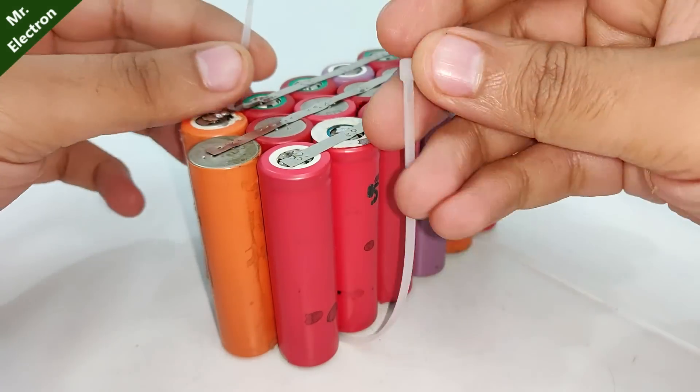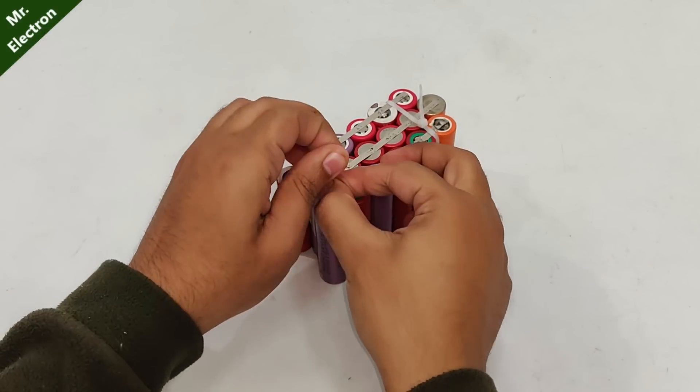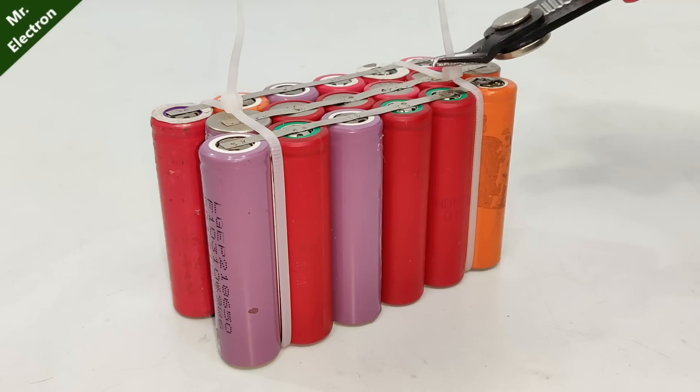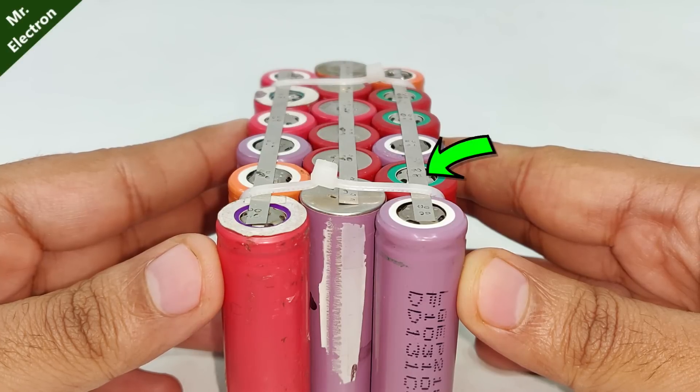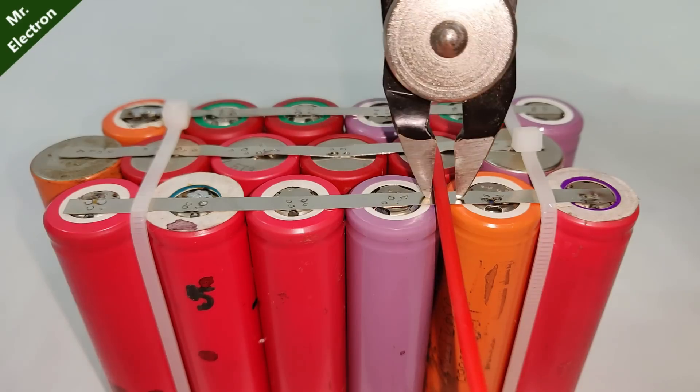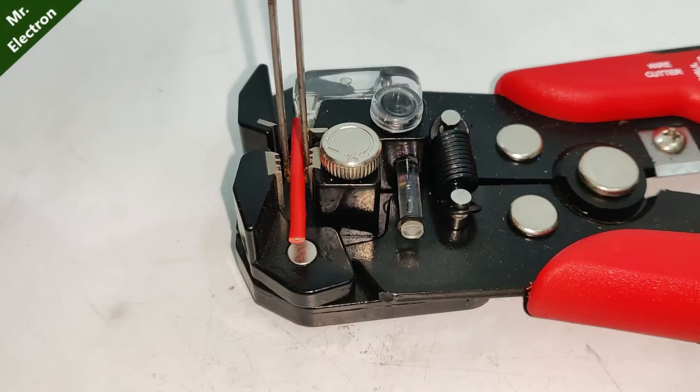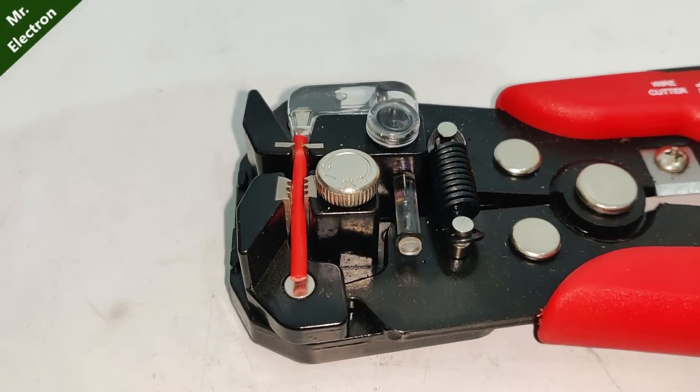So here I've placed the three battery sets in such a way that I can connect them in series, and now it is time to do the connections: positive, negative, positive. Step one, take a wire, measure the distance from positive to negative and cut it in four equal halves. After that use the wire stripper to strip the ends of your wires and put some flux.